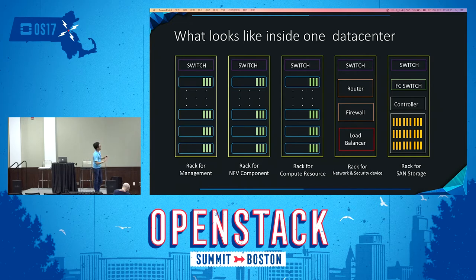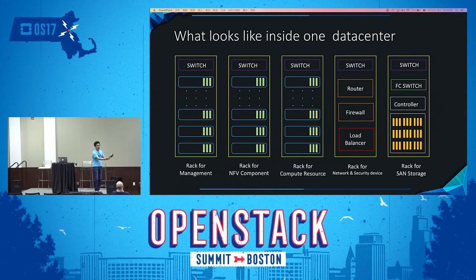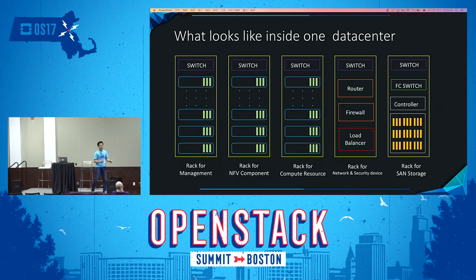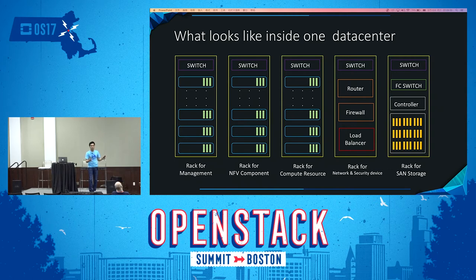We've already built the cloud data center with our customer. Since there is a lot of equipment, we separated it into different racks: a specified rack for management, NFV components, compute resources, network/security devices, and storage. For the management rack, we have the cloud platform, SDN controller, virtualization management platform, and other management tools. These are distributed across multiple racks to guarantee high availability.